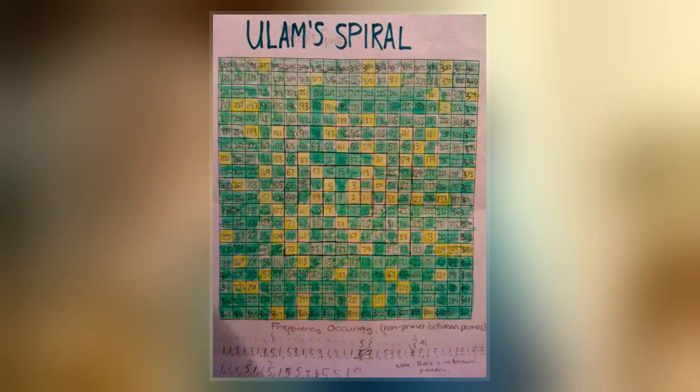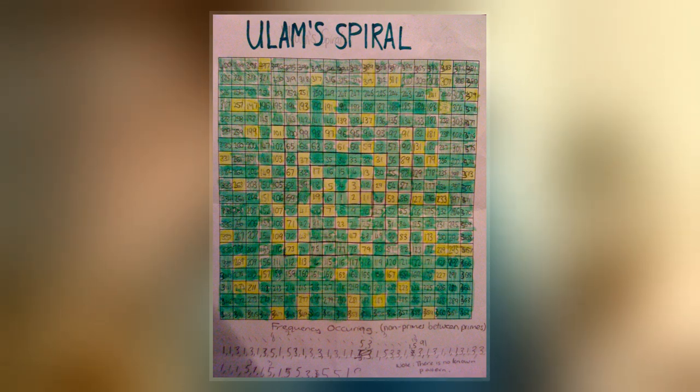Ulam and Gardner emphasize the striking appearance in the spiral of prominent diagonal, horizontal, and vertical lines containing large numbers of primes.